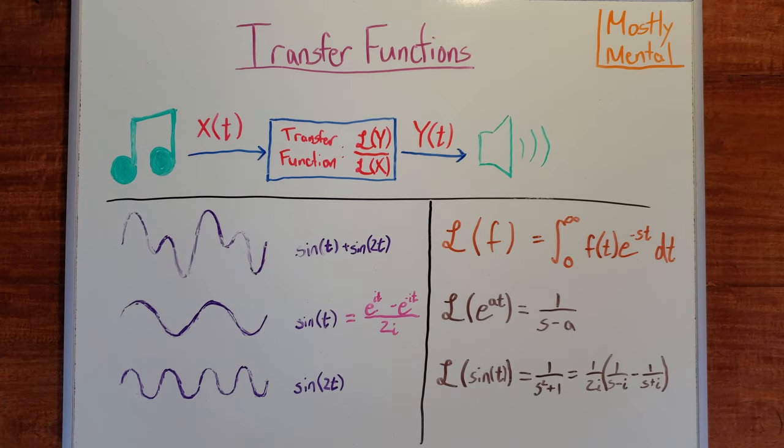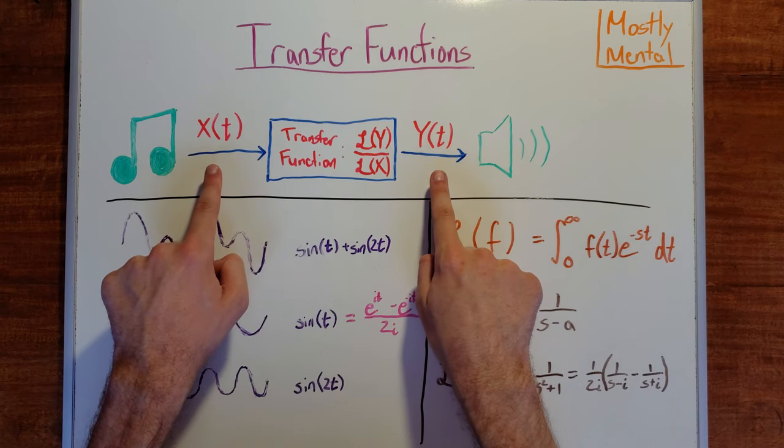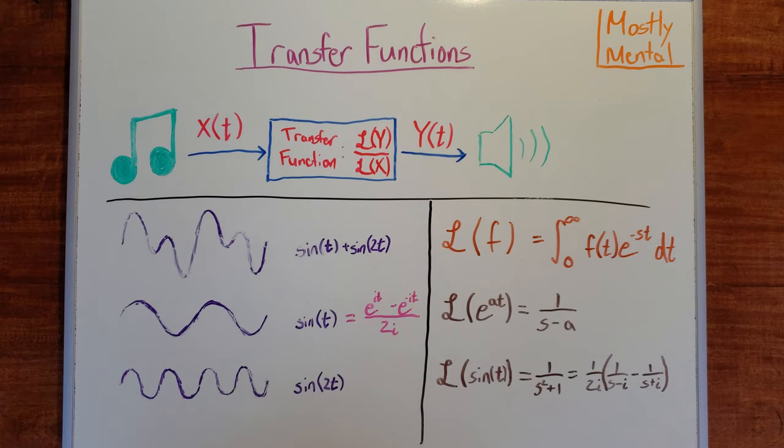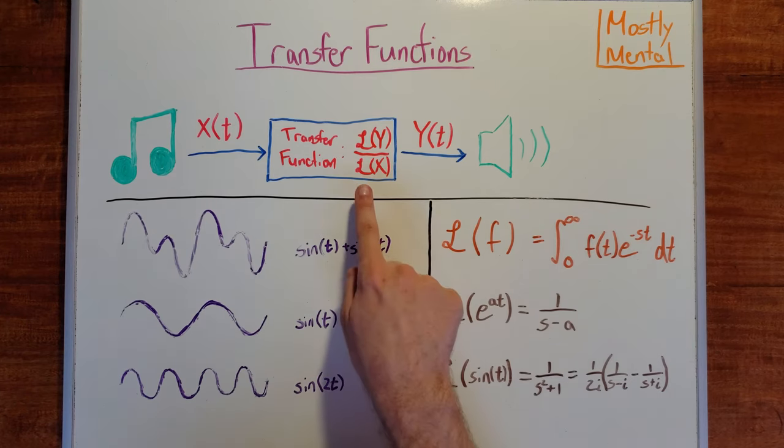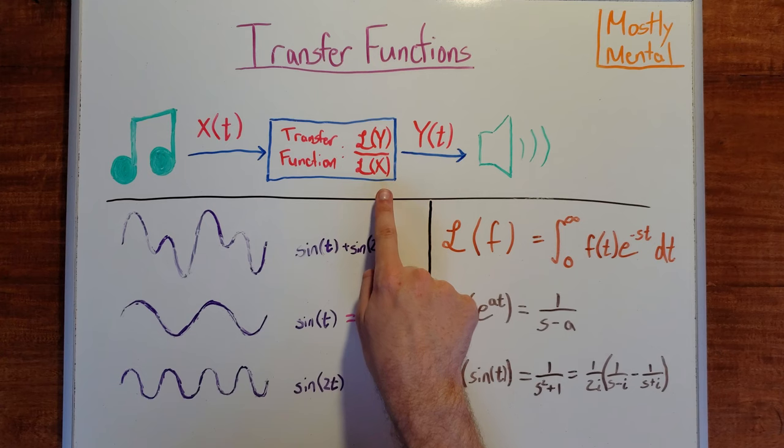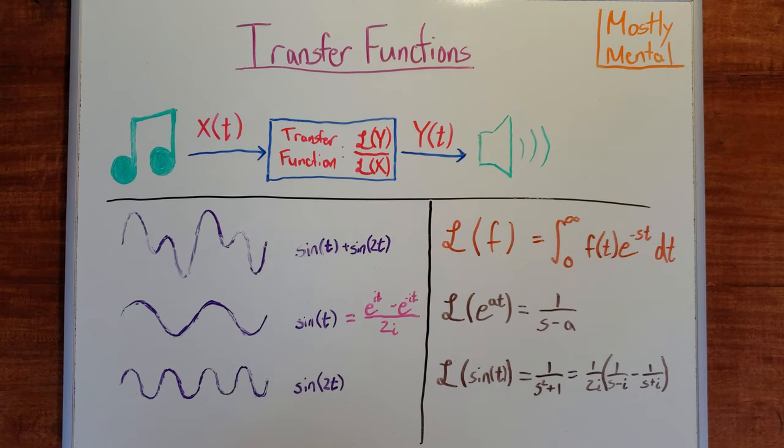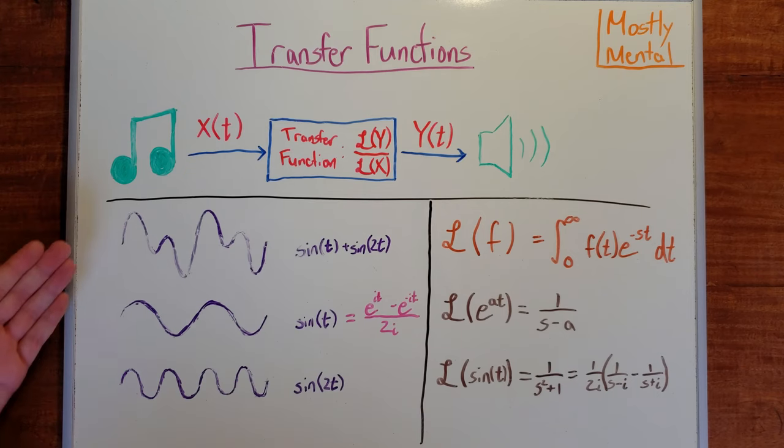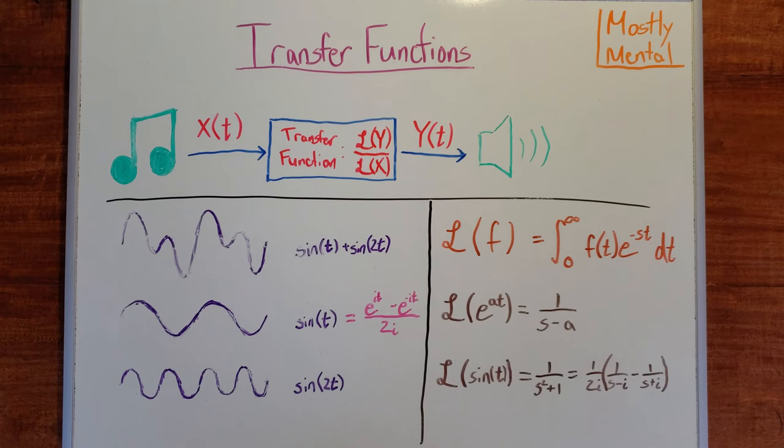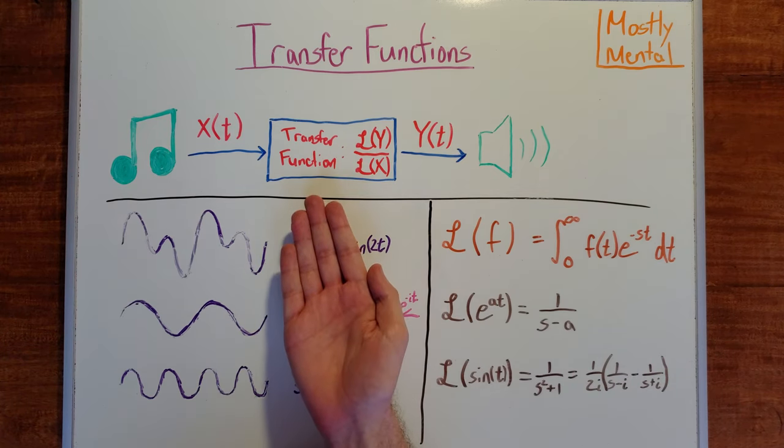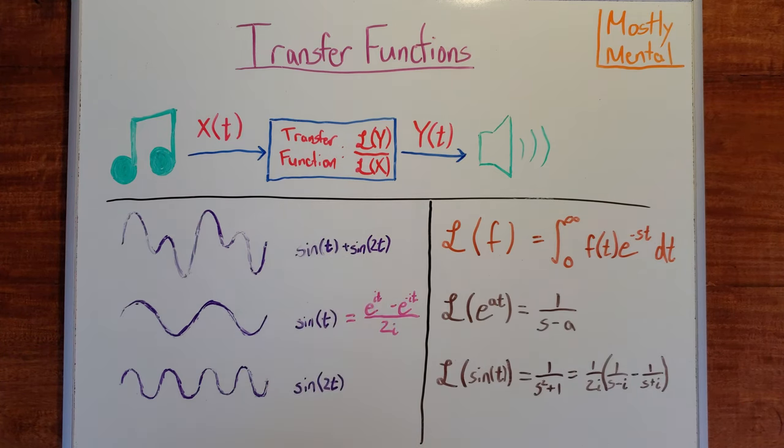So if we have an input and an output signal, x and y, their Laplace transforms tell us which exponential functions they're made of. If we divide L of y by L of x, we see how those exponential functions are transformed. And since every signal is made of those same exponential functions, that tells us how every possible signal will be transformed. And all of that is captured in the transfer function. That's a lot of theory, so let's see how we can put it all into practice.